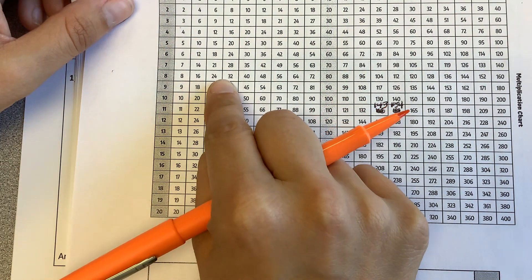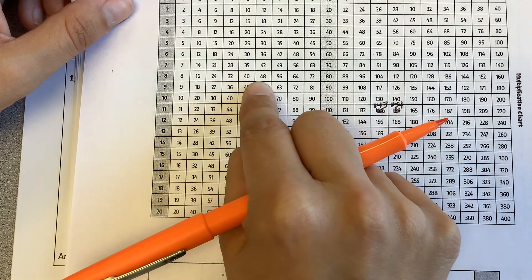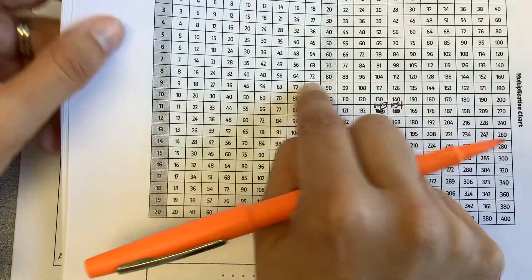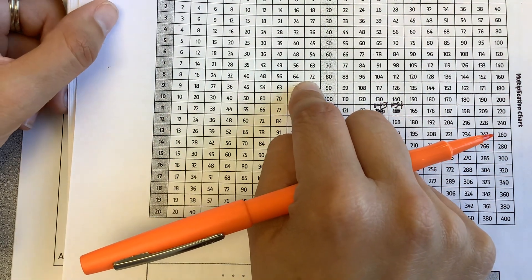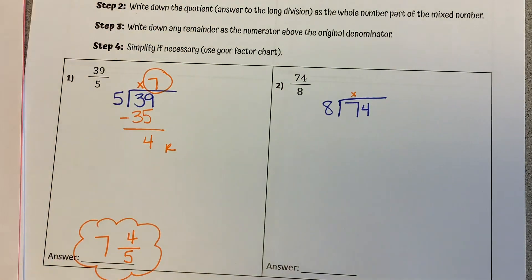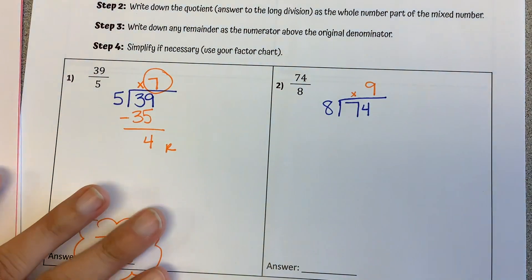So looking at our multiples of 8. 8, 16, 24, 32, 40, 48, 56, 64, 72. 80 is too big. So 72 is the most it can go in. If we go up, that's 9 times. So it goes into 74 9 times.